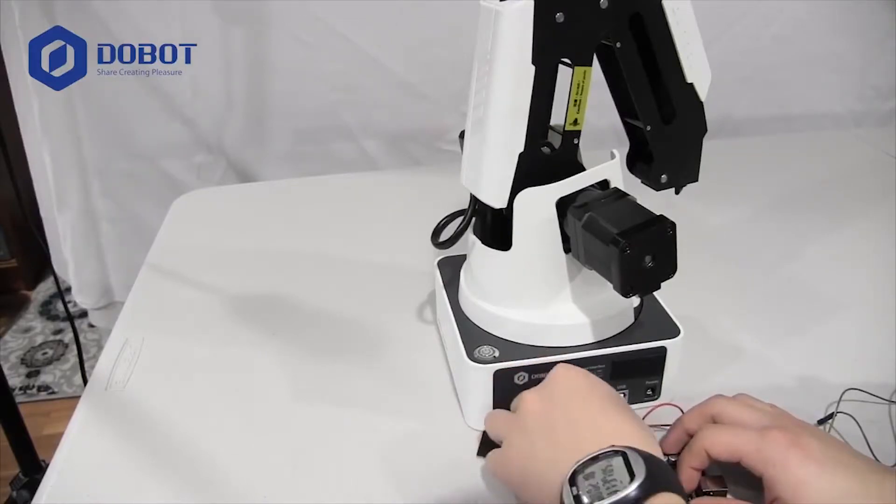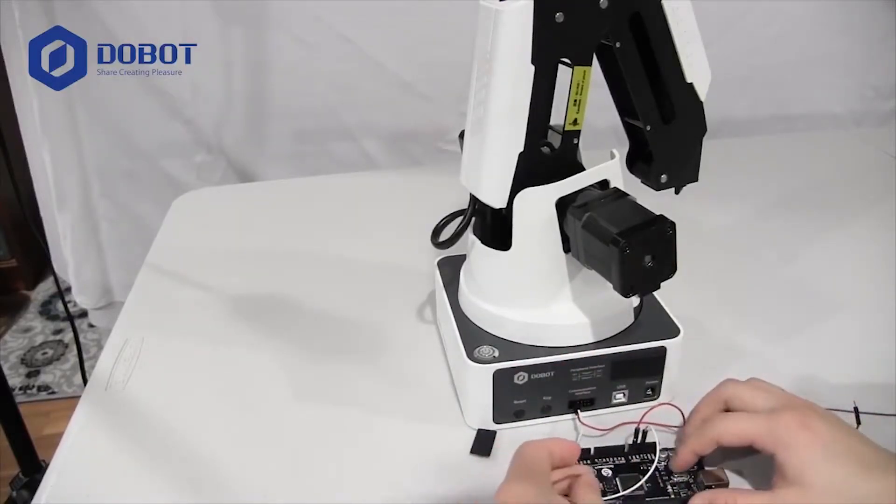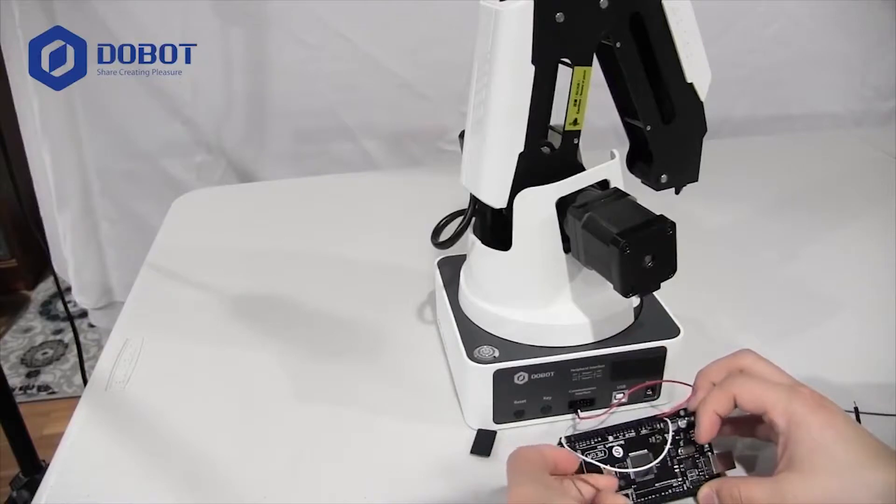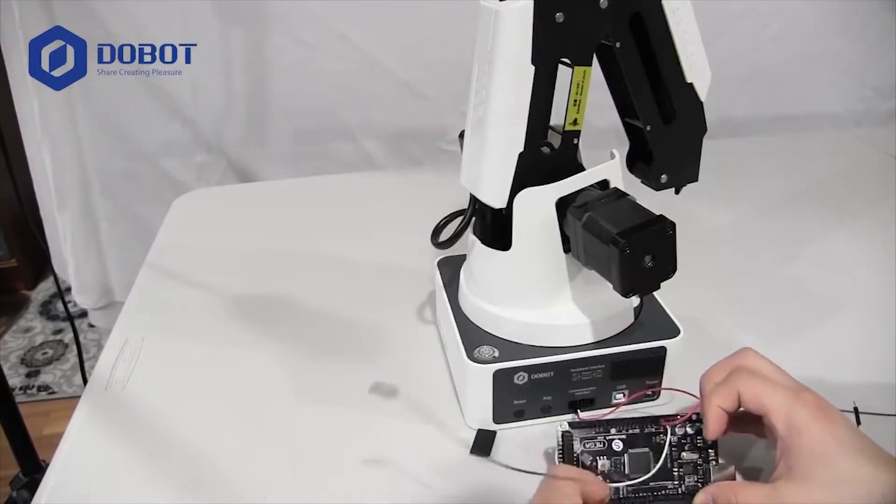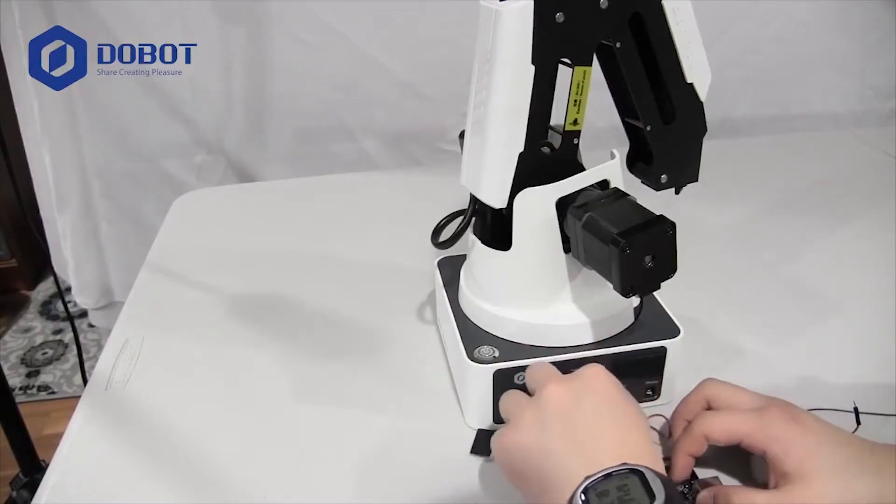Alright. Now, take another wire, plug it into RX or pin 19, digital pin 19, right there. Plug it into the one right next to GND to the right.